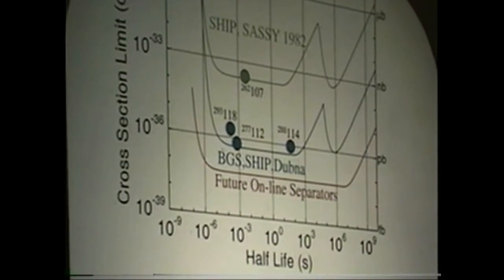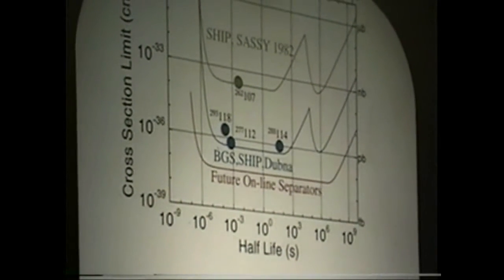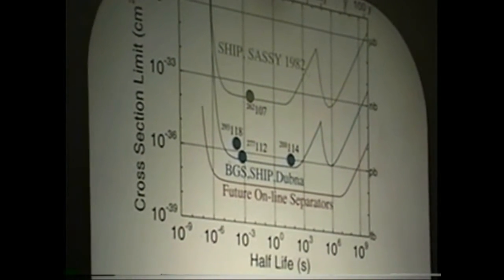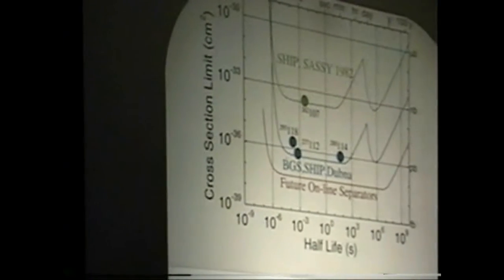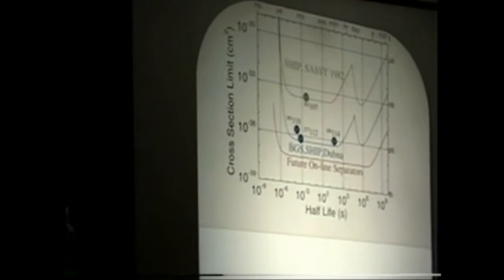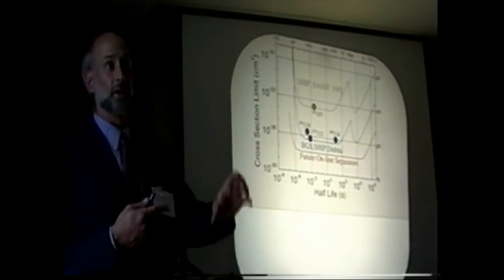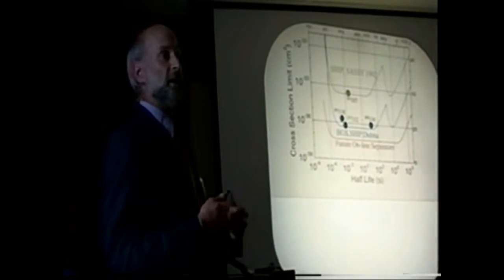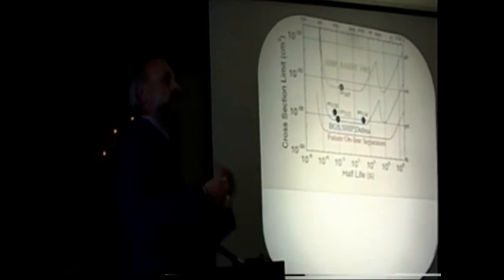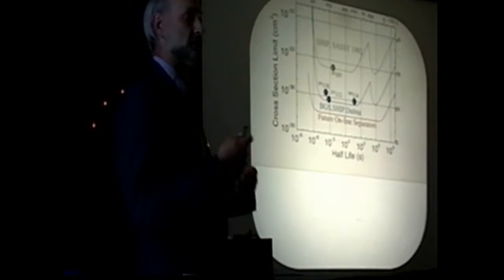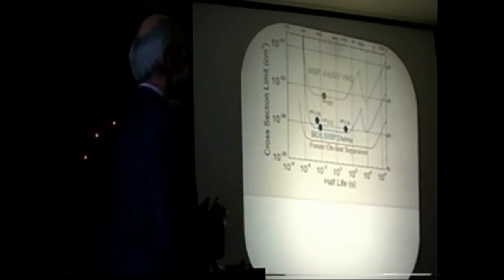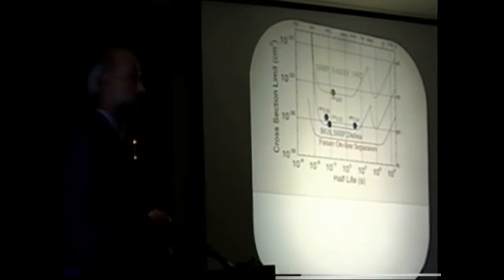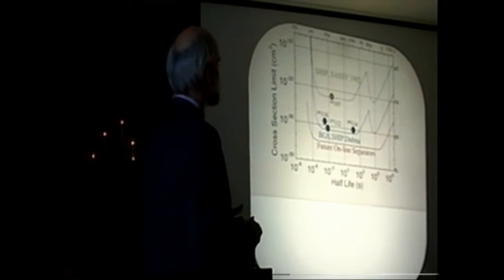We had Sigurd Hoffman a few years ago come over to Berkeley and tell us about improvements that were made at the GSI UNILAC between the discovery of element 109 and the discovery of element 110, which Darlene showed there was a gap of about 10 years there. It was really impressive because there were a large number of 20% improvements in efficiency or throughput in the experiment, and it really totaled to a couple orders of magnitude in sensitivity.